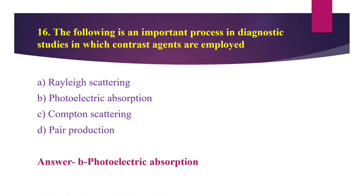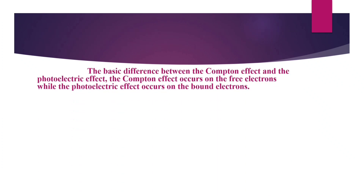The answer is option B, photoelectric absorption. Now let's see the explanation. The basic difference between the Compton effect and the photoelectric effect: the Compton effect occurs on the free electrons, that is the outermost shell electrons of an atom, while the photoelectric effect occurs on the bound electrons, that is the K shell.